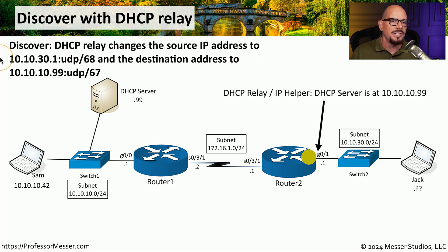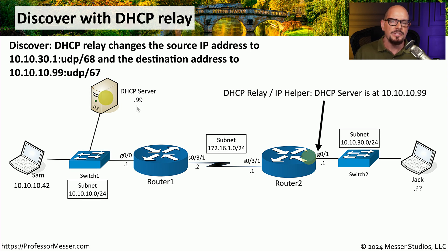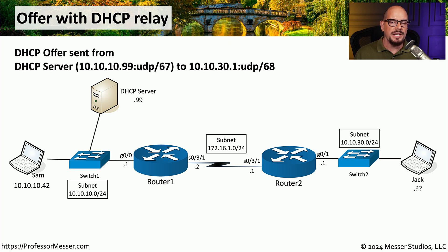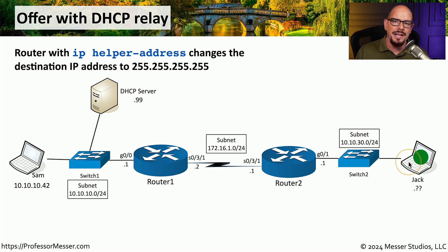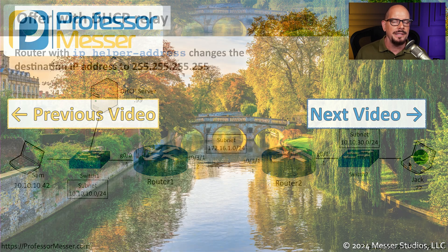The router changes the source IP address to its own IP address — in this case 10.10.30.1 — and changes the destination address to the IP address of the DHCP server, effectively turning what was a broadcast into a unicast communication. This packet can now be sent across the network to a DHCP server on a different subnet. The offer process works in reverse: the offer leaves the DHCP server directed via unicast to the router's IP at 10.10.30.1, and the relay modifies it back to a broadcast for the local subnet. This process repeats for the last two phases of DHCP, allowing Jack's workstation to receive an IP address even though the DHCP server is on a completely different IP subnet.